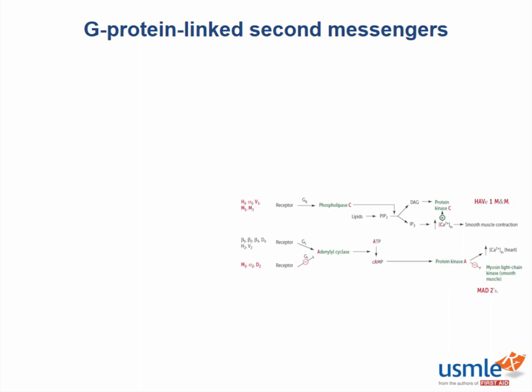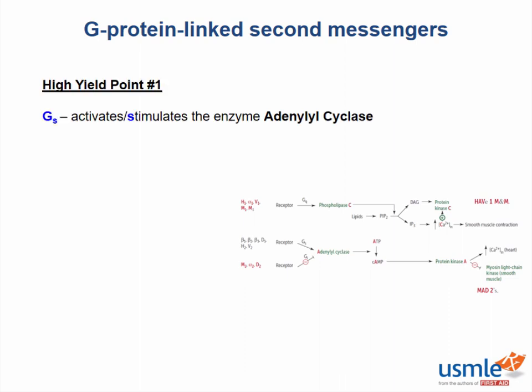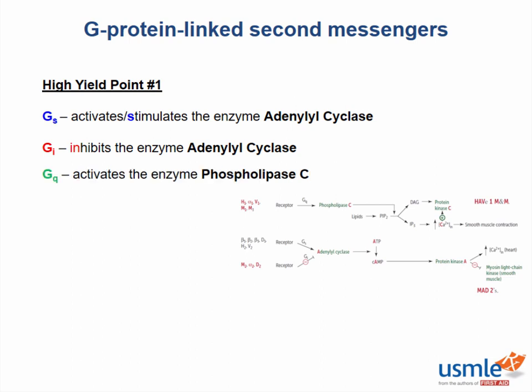These G proteins come in three flavors. One, Gs, which activates — or S for stimulates — the enzyme adenyl cyclase. Two, Gi, which inhibits adenyl cyclase. And three, Gq, which activates the enzyme phospholipase C.